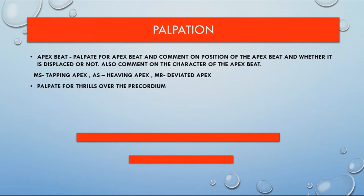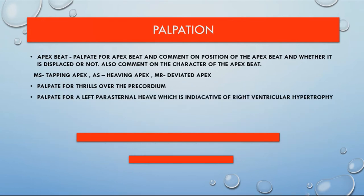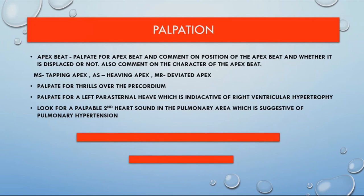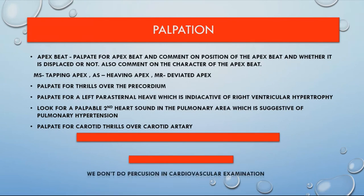Palpate for thrills of the precordium — if there is a murmur, we may be able to palpate the thrills. Palpate for a left parasternal heave, which is indicative of right ventricular hypertrophy. Look for a palpable second heart sound in the pulmonary area, which suggests pulmonary hypertension. Finally, palpate for carotid thrills. Note: there is no percussion in precordium examination, so we go directly to auscultation.